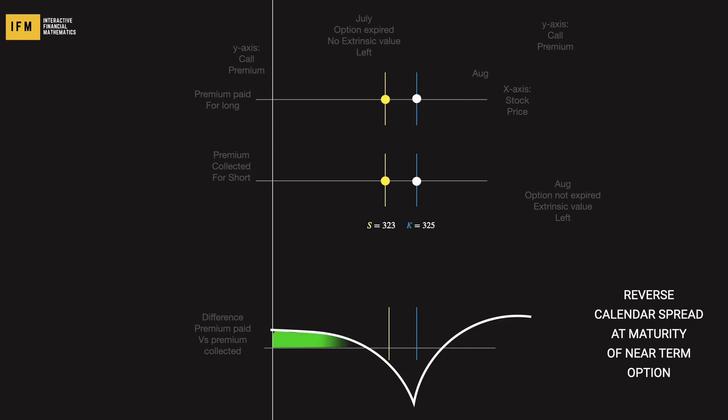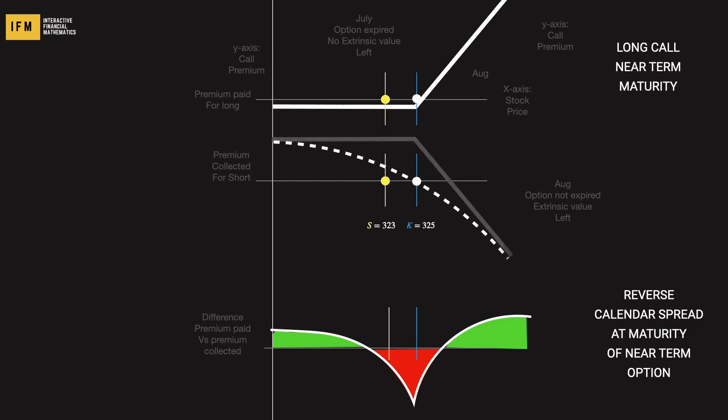In a reverse call calendar strategy, we begin by purchasing a near-term call option and selling a far-term call option. At this point in time, as shown on the screen, the near-term call option has expired, leaving us with the far-term call option which we sold and which still holds extrinsic value. The combined payoff of this strategy resembles a straddle but with a curve, indicating potential profits from significant moves in the stock price in either direction. The risk here lies in the stock price remaining stagnant or implied volatility not increasing as expected.